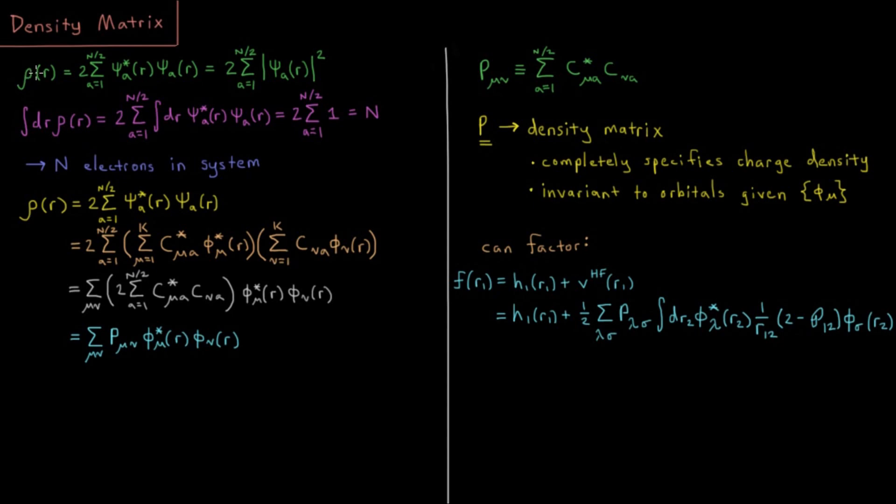Overall, the electron density over all space should be the number of electrons. Starting out, the electron density as a function of position is going to be in restricted Hartree-Fock 2 times the sum from a equals 1 to n over 2 of spatial orbital psi star a times psi a, times 2 because each of them has two electrons, a spin up and a spin down.